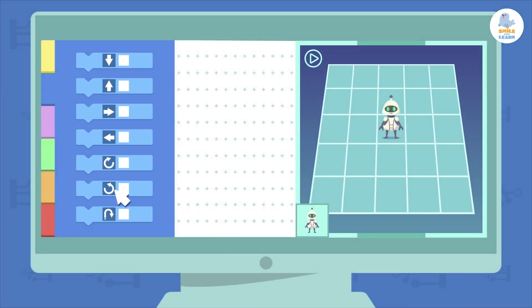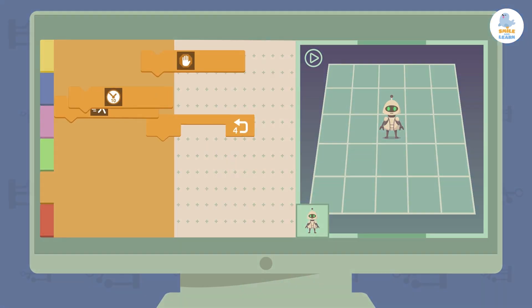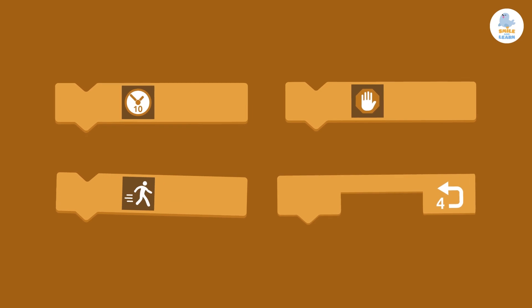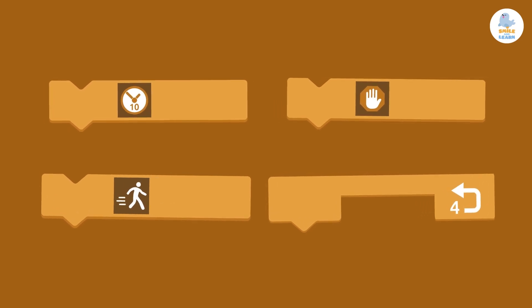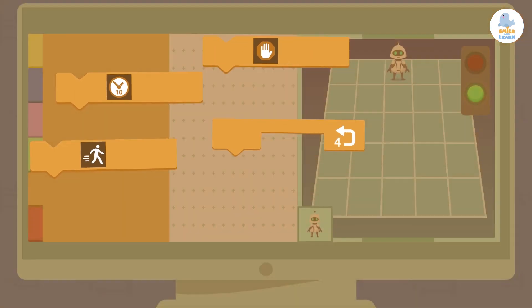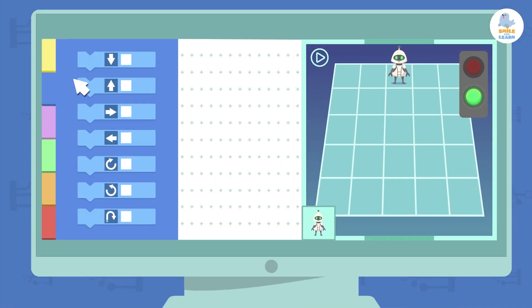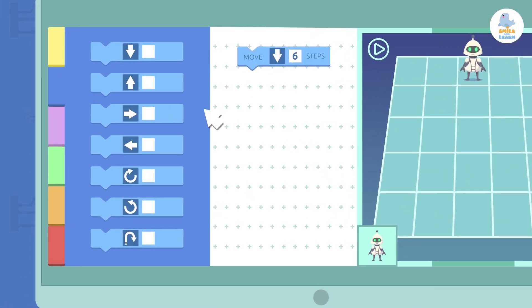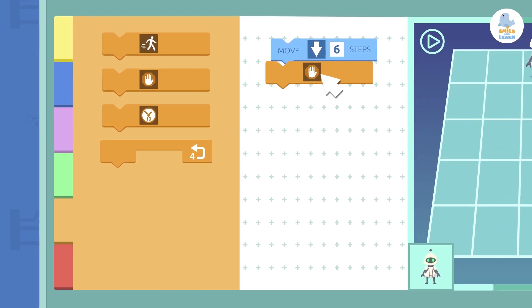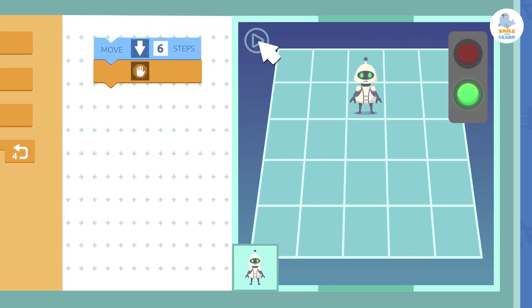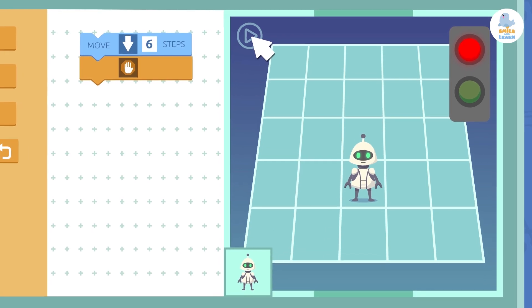But there are also control blocks, which are orange. They help you repeat an action as many times as you want and set conditions. For example, you can teach a robot to walk forward only when it sees a green light and to stand still if it sees a red light, just like a traffic light.